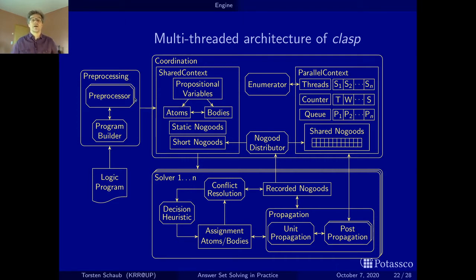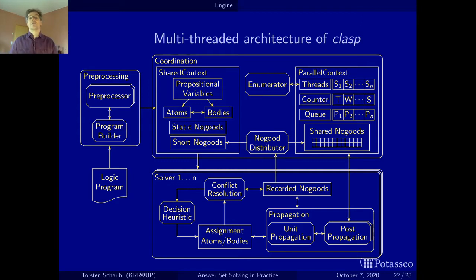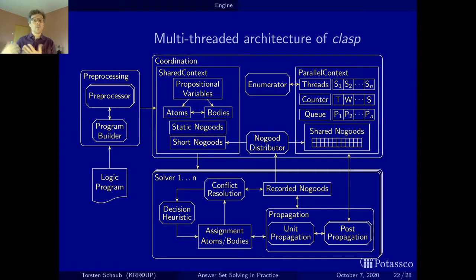A couple of preprocessing steps happen, and even though you can configure them via the command line, in principle there are two different preprocessing steps. The first works on the logic program and does simplifications under the stable model semantics. Then the logic program gets translated into so-called no-goods, which are boolean constraints — clauses which express that certain propositions cannot be true together. We borrow techniques from preprocessing in satisfiability testing, adapted to our semantic setting. Satisfiability testing works under the open world assumption, while stable model semantics works under the closed world assumption, so we must take care not to simplify things that work under one semantics but not the other.